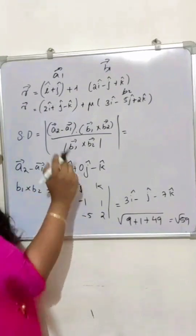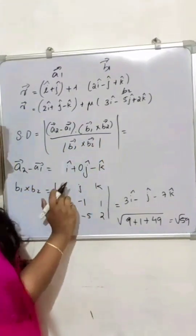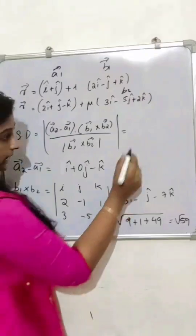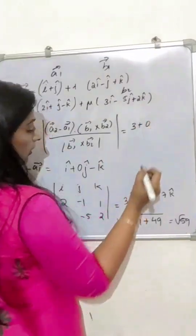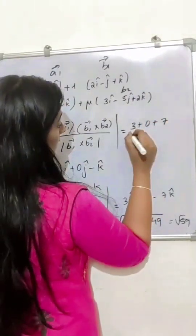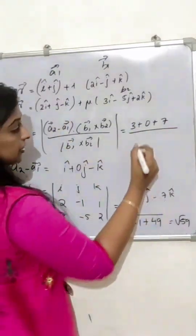For the shortest distance, first compute a2 minus a1 dot b1 cross b2. This gives: 1 into 3, which is 3, plus 0 into minus 1, which is 0, plus minus 1 into minus 7, which is plus 7, divided by modulus of b1 cross b2 root 59.